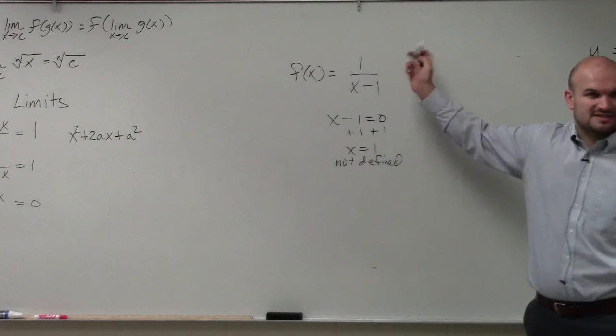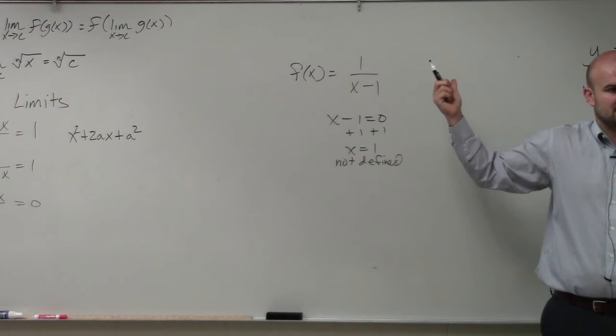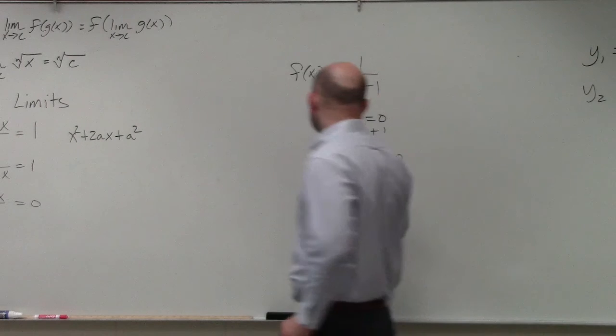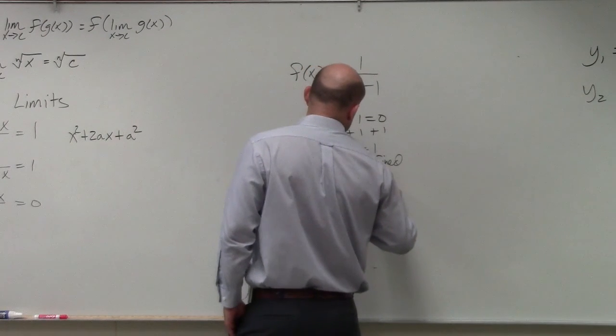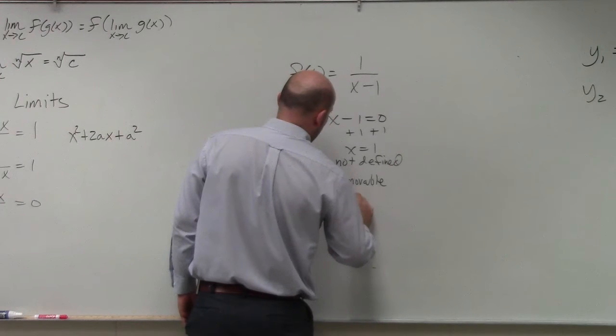Now, could I factor this out like I did in those previous examples? No, so guess what? This is non-removable, and this is going to create an asymptote.